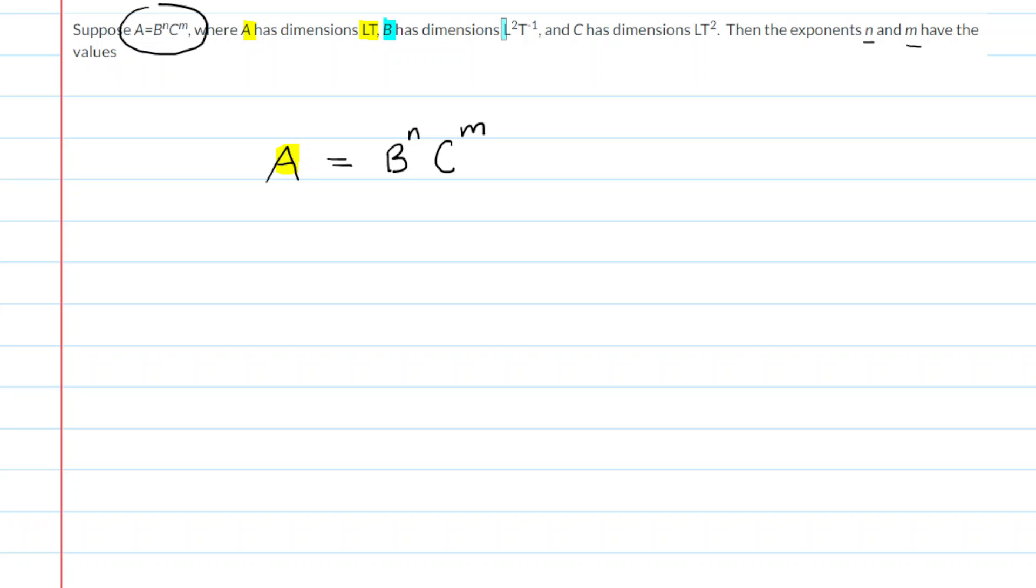b has dimensions l squared and t to the power of negative 1, and again we'll plug that in for b in just a moment. And then c has dimensions l times t squared, so we'll plug that in as well. So let's go ahead and plug in all those dimensions.